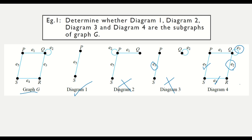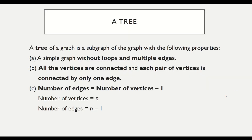Now we look at a tree. A tree of a graph is a subgraph with the following properties — remember these three. Property A: it is a simple graph, meaning no loops and no multiple edges. Property B: all vertices are connected, and each pair of vertices is connected by only one edge.